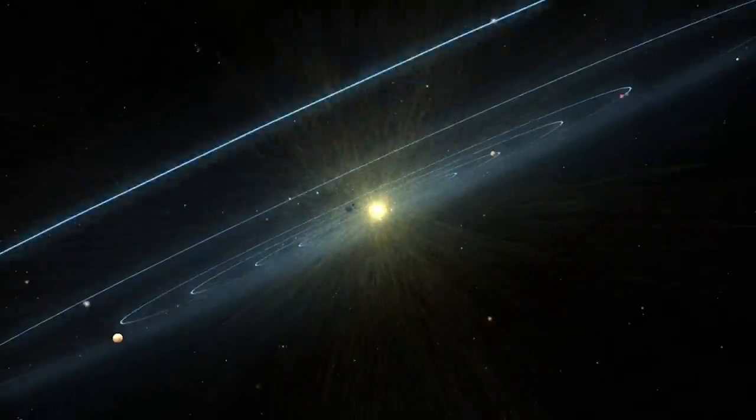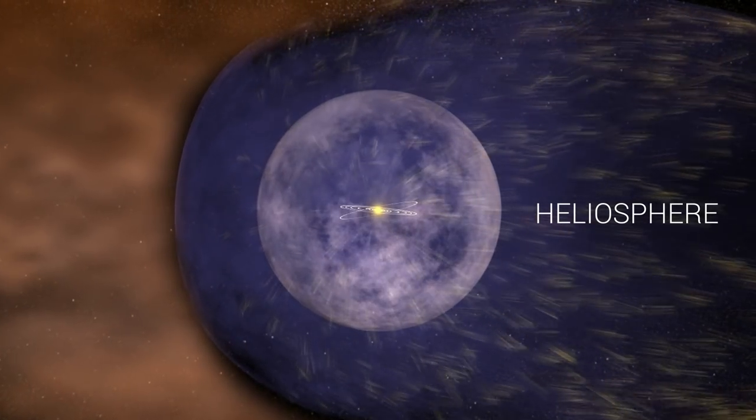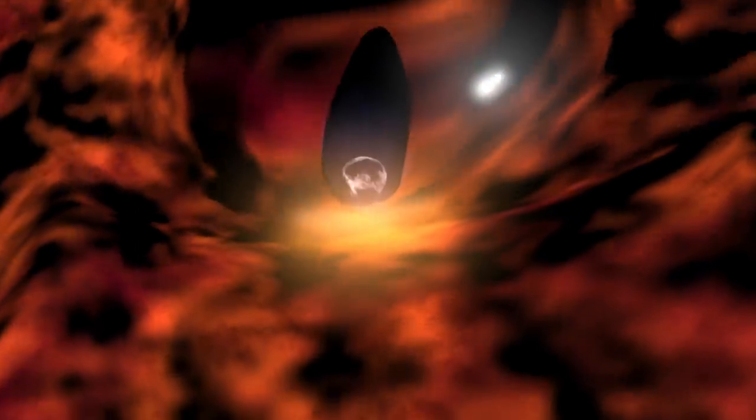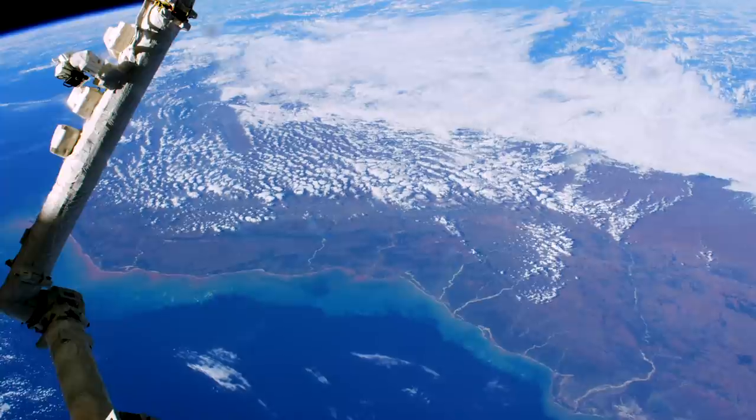The wind forms a giant protective bubble around our solar system known as the heliosphere. This huge region surfs through the Milky Way, shielding us from interstellar radiation and creating an environment that helps life on Earth to flourish.